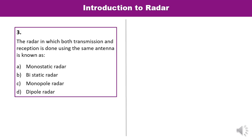Question 3: The radar in which both transmission and reception is done using the same antenna — that type of radar, which uses a single antenna for both, is known as monostatic radar. So A is the correct answer.